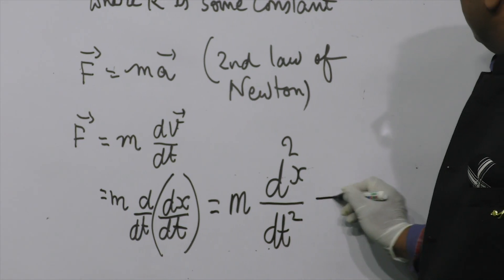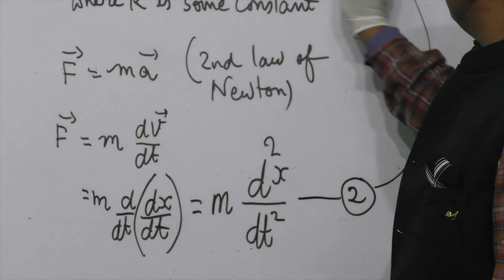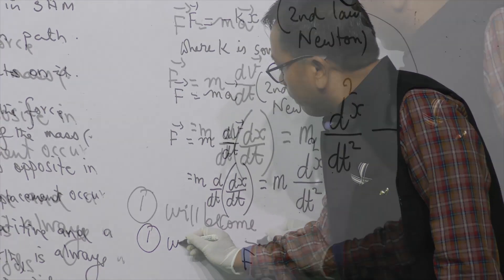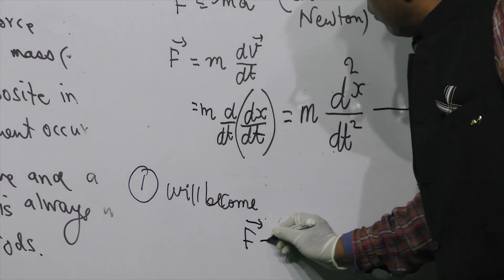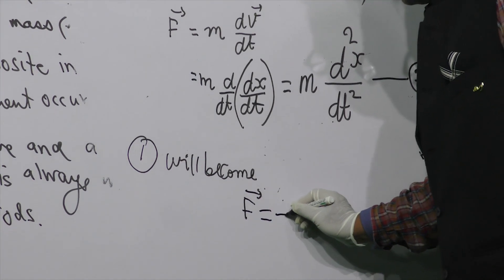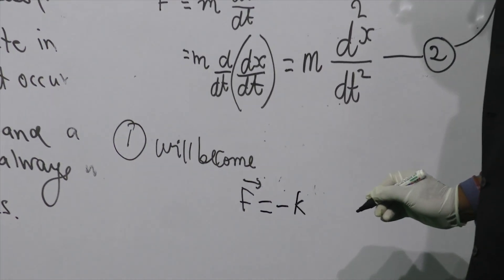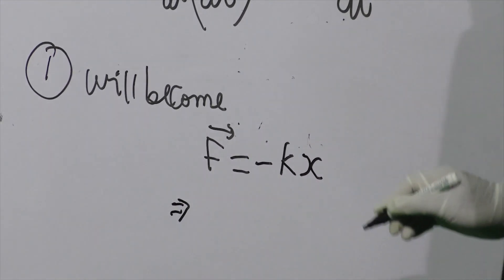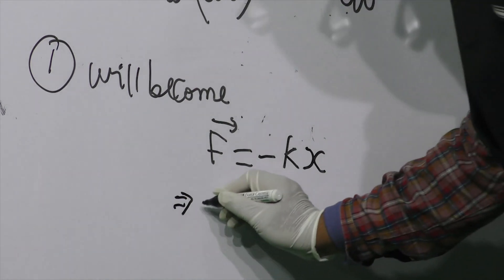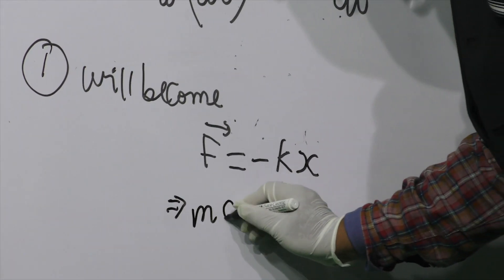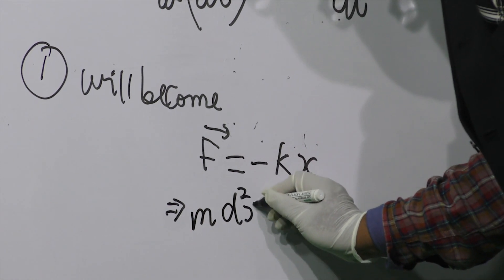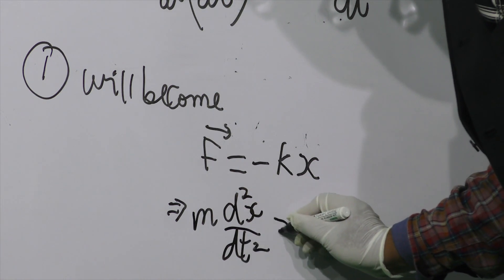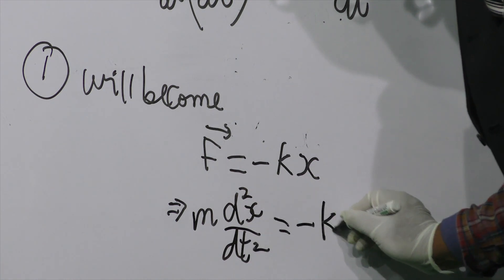So putting this in equation number 1. Use this in equation number 1. Then, this will look like the force equals minus k times x. This implies F equals, because F is M, then d square x by dt square equals minus times kx.